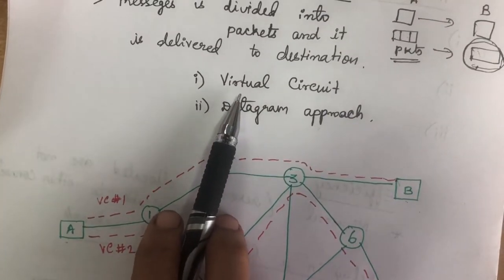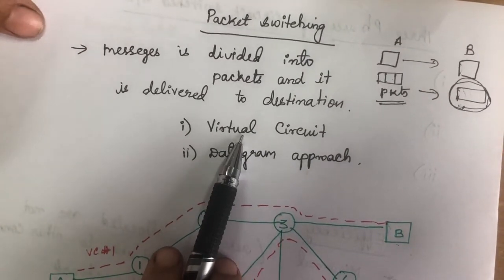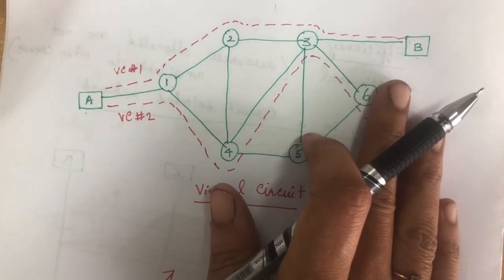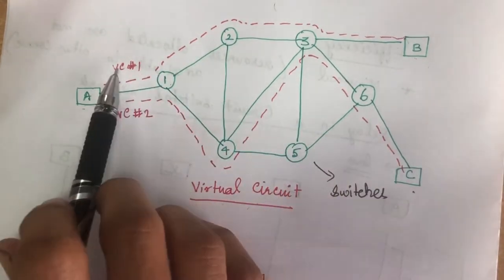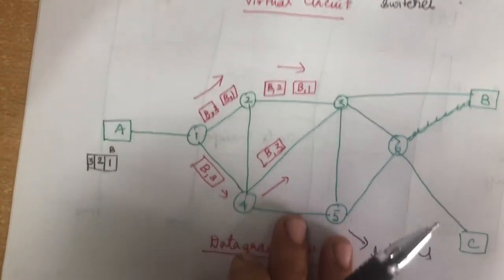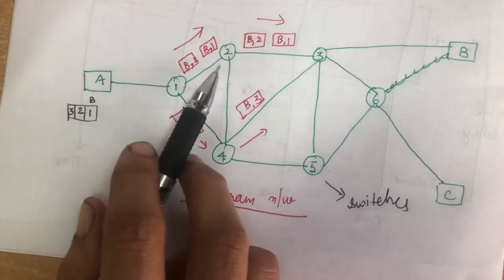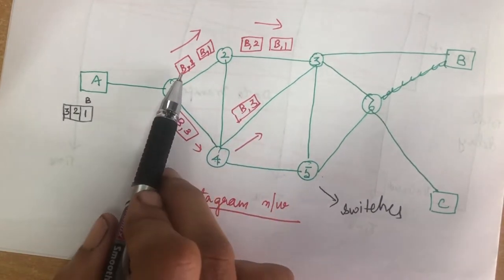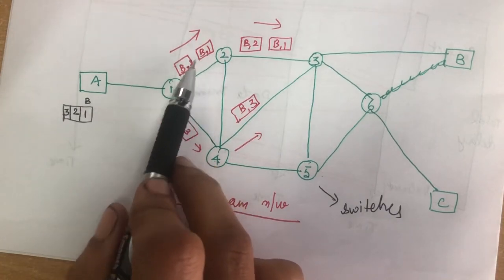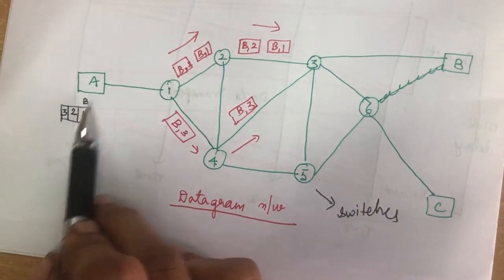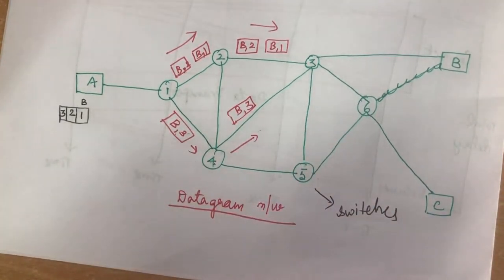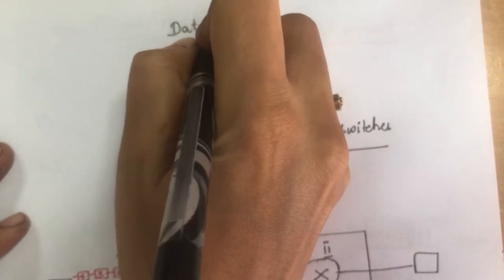So there are two types of packet switching: virtual circuit and datagram approach. In virtual circuit, one pre-planned route is established and all packets follow the same path. In datagram approach, all packets follow different paths. Here B represents the destination, and the numbers represent packet numbers. Packets 1 and 2 pass through one path while the 3rd packet passes through a different path. Now we will see in detail about datagram networks.